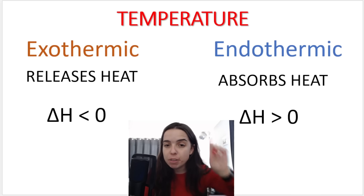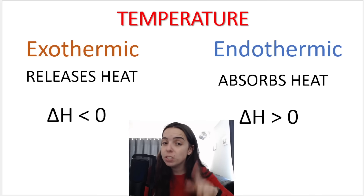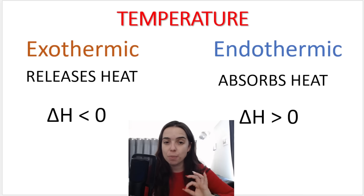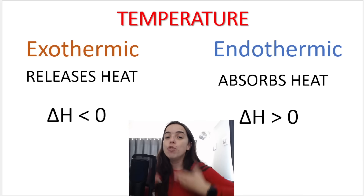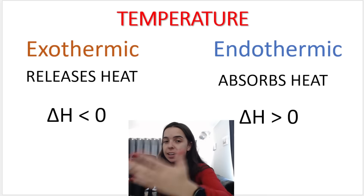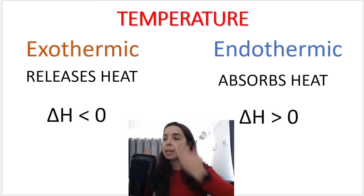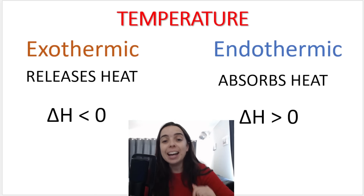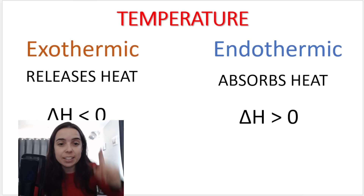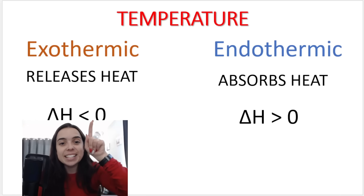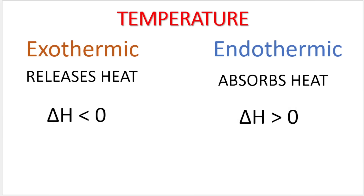Based on what you should remember from previous years, it's also very important for this year: exothermic — think 'exit' — it releases heat, heat is exiting. The change in enthalpy, or the heat of the reaction, is less than zero, which means that it is negative. So if you get a negative value for change in enthalpy or heat of reaction, you know that we're dealing with exothermic.